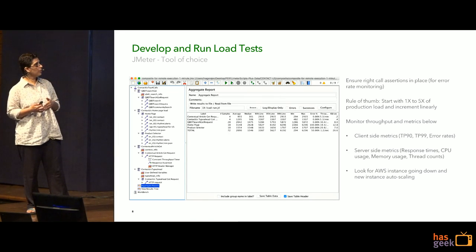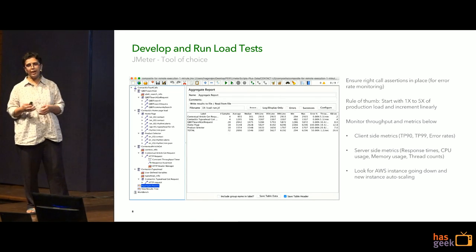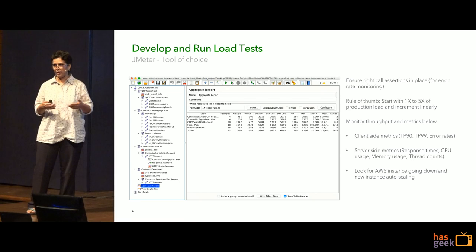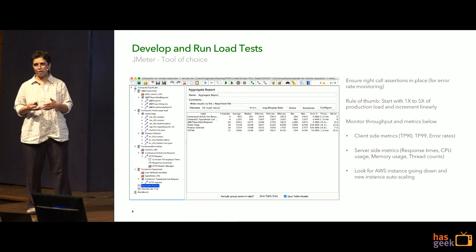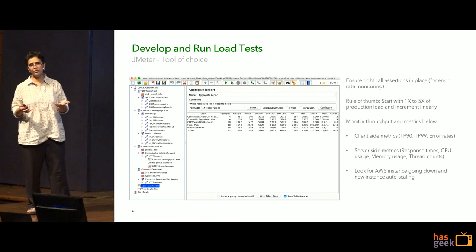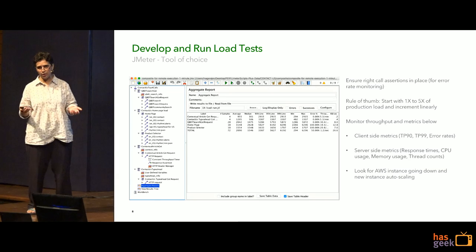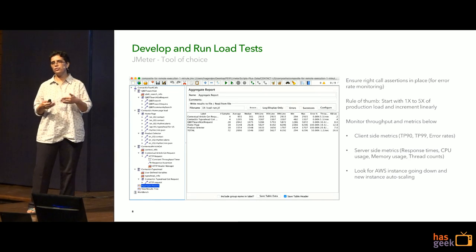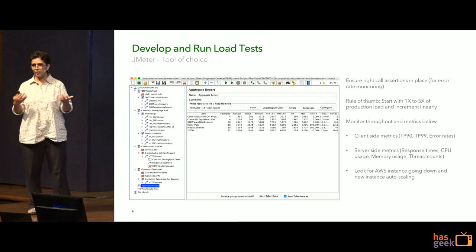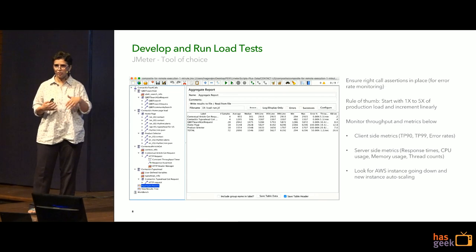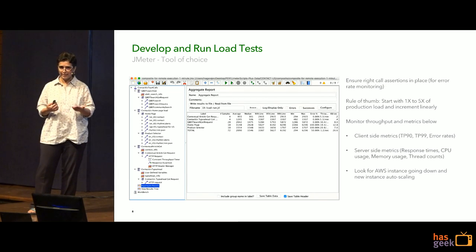You also want to understand where you actually cap your load test — where do you start and where do you stop? A common rule of thumb is to start with 1x of your peak production load and then increment it linearly to 5x, and see how your system behaves until then, and go back and see if you still need to go further than that.